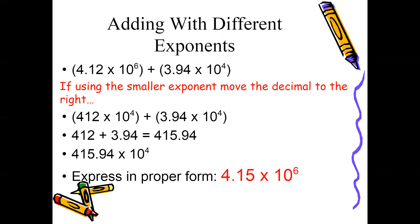You only change the coefficient of the expression whose exponent you're reducing. So I'm only going to change 4.12. Because I decreased the exponent by two, I'm going to move my decimal two places to the right, which makes it 412. I rewrite the expression so now both exponents are the same: 412 × 10⁴ plus 3.94 × 10⁴.